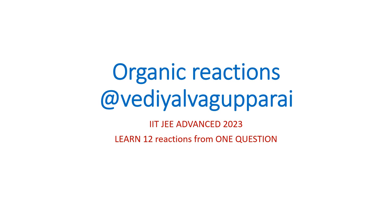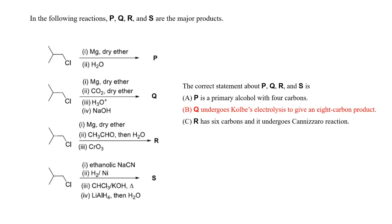Hello, welcome to Vedial Vagaparai. In this video, we are going to see an IIT JEE Advanced question of 2023. Through this question, we are going to learn 12 organic reactions. The question has 4 different sets of equations and the end products are denoted by P, Q, R, and S. I have marked in red the correct option. Each of these reactions is an individual reaction and they are different reactions. We are going to see what they are, their significance, how we arrive at each product, and how we conclude the correct option.